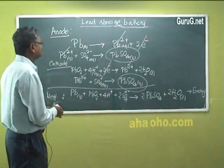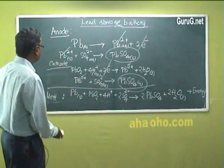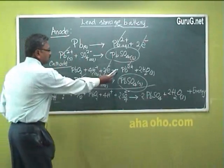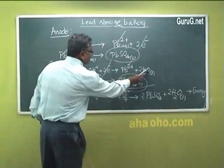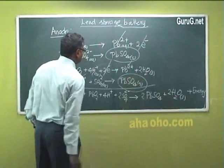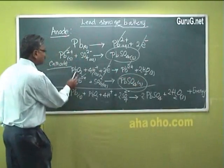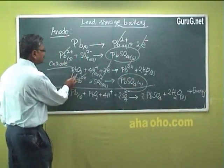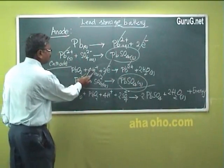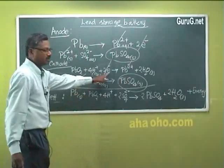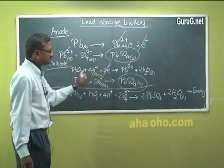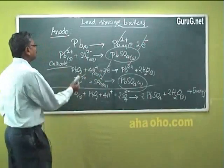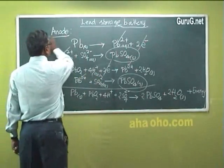During recharge mode, at the anode Pb²⁺ combines with 2H₂O to form lead oxide, 4H⁺, and 2 electrons. All these reactions get reversed. During discharge mode the lead storage battery works as an electrochemical cell; during recharge mode this electrochemical cell becomes an electrolytic cell, utilizing electrical energy to carry out the reverse reactions.